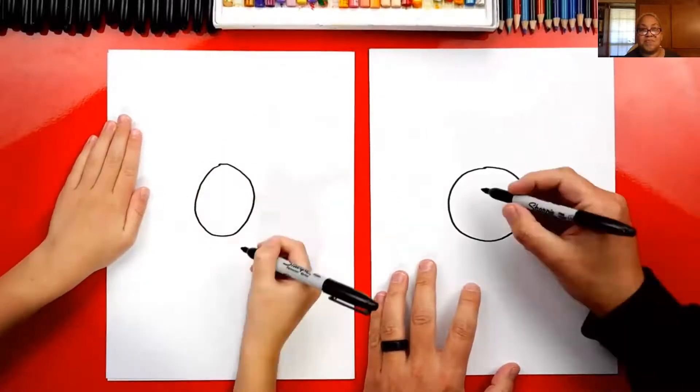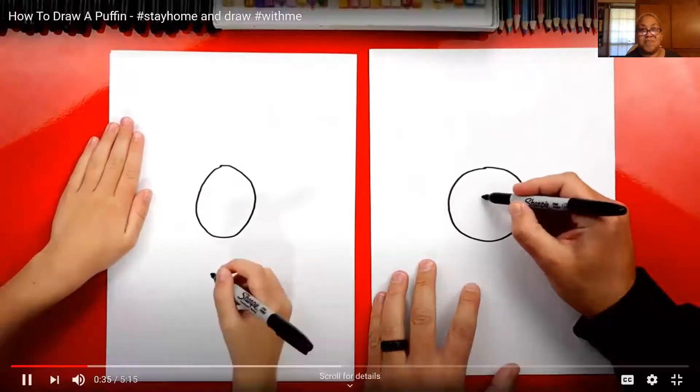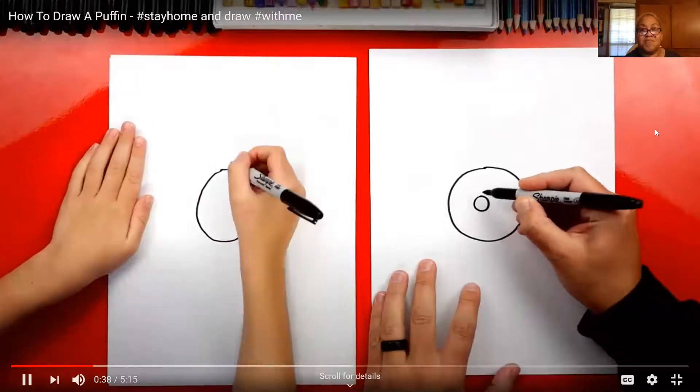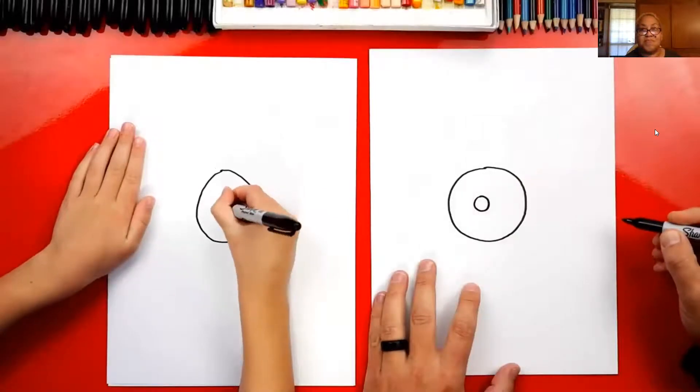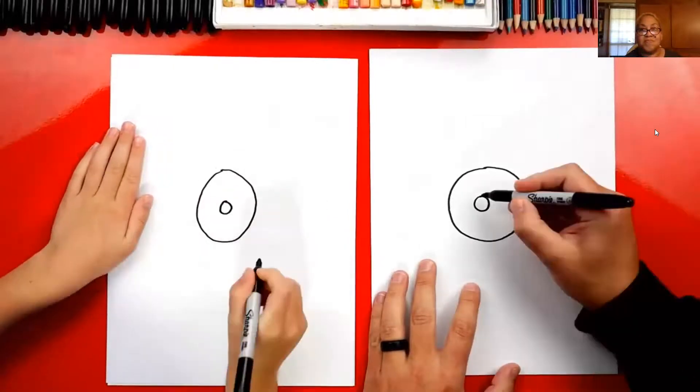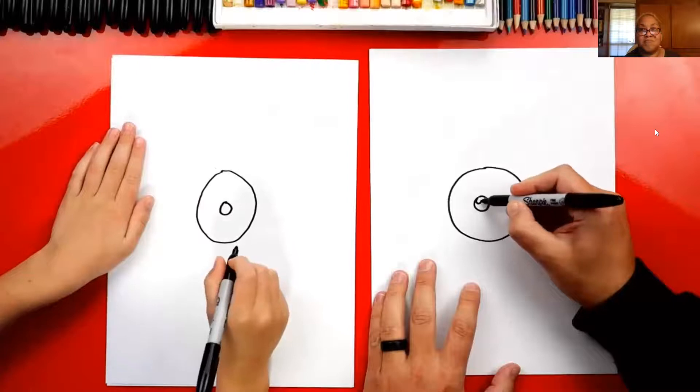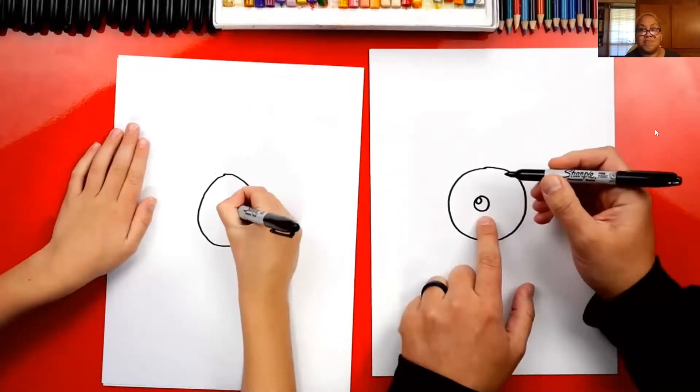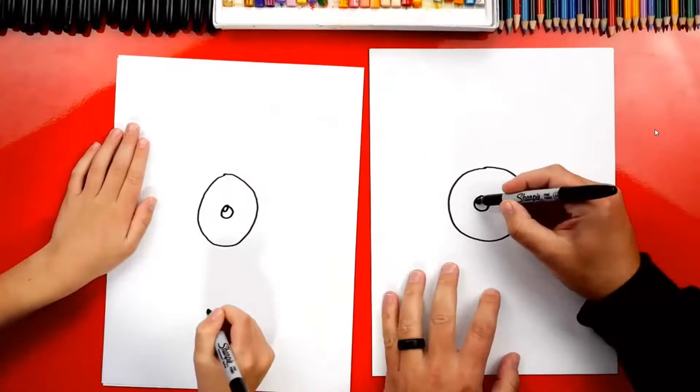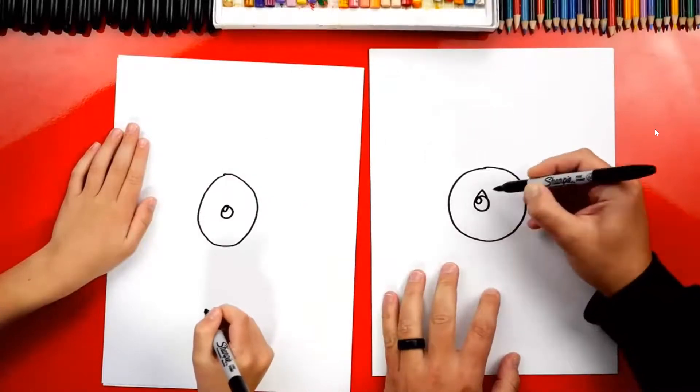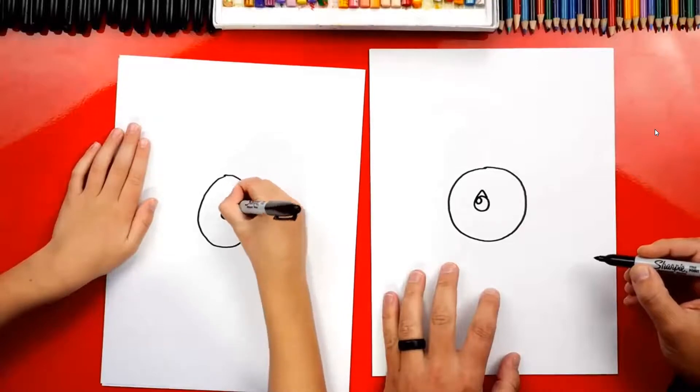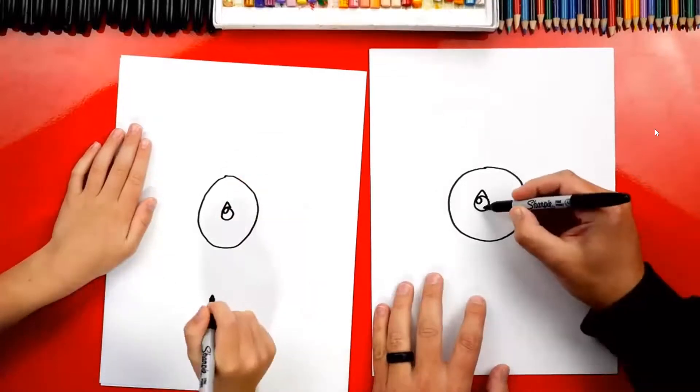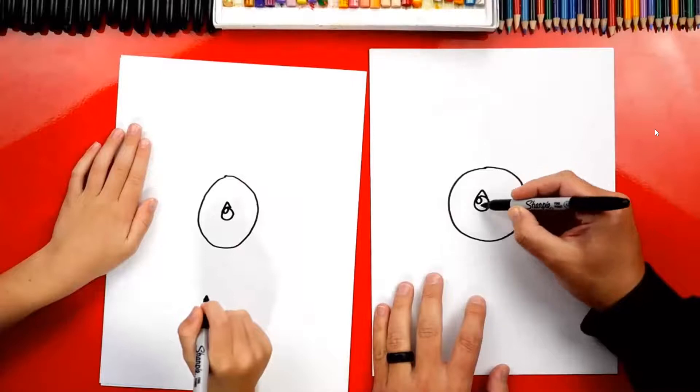There we go. And then on the inside, let's also draw another circle for the eye. And then in the top left of that circle, you can draw a smaller circle for the highlight. Then let's also draw a little upside down triangle above it. Good job. All right, now let's color in the big circle and also that triangle shape.